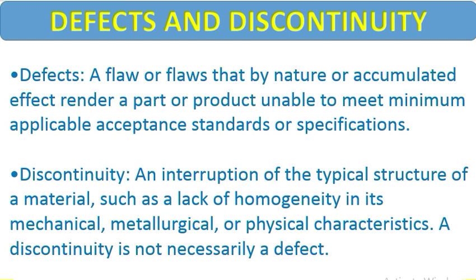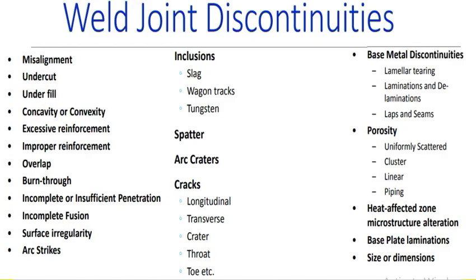The weld joint discontinuities include: misalignment, undercut, underfill, concavity, excessive reinforcement, improper reinforcement, overlap, burn through, incomplete or insufficient penetration, incomplete fusion, surface irregularity, and arc strikes. We will discuss about 80% of these discontinuities in this video.